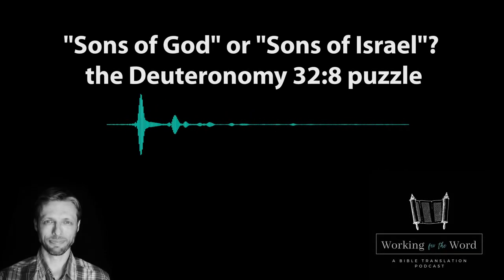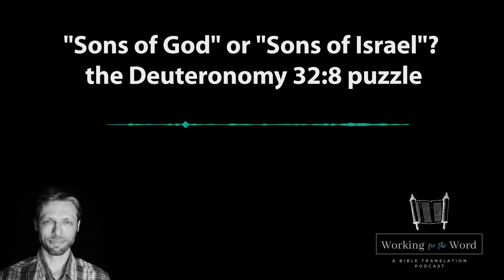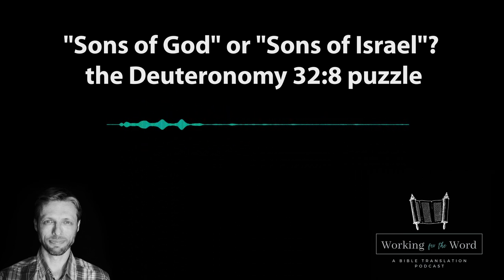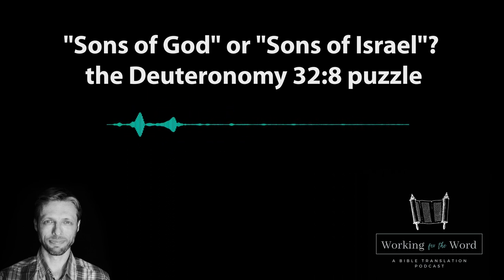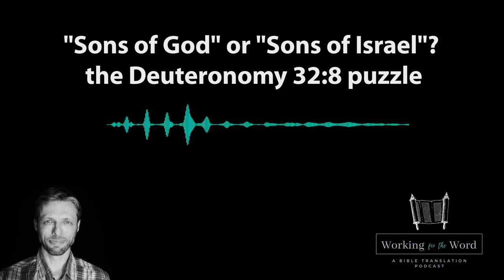A while back, while I was checking Deuteronomy in the Mixteco language of Mexico, we came to chapter 32, which is a whole lot of difficult poetry. Verse 8 stood out as one of the most complex verses to navigate and explain, mainly because of a textual variant. The big debate is whether to read the original text as saying 'sons of God' or 'sons of Israel,' and getting to a solid answer isn't simple. English translations still don't agree on it, but we're going to do our best to tackle it in this episode and see where the Mixteco translation landed.